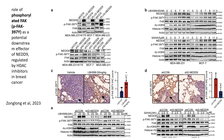Panel D compares FAK phosphorylation levels in lung metastases from NET9 knockdown mice and controls. Knockdown of NET9 significantly reduces FAK phosphorylation, as shown in the IHC staining and quantified scores, further supporting the conclusion that NET9 is essential for FAK phosphorylation. Panel E investigates whether HDAC inhibitors can enhance FAK phosphorylation in the absence of NET9. HDAC inhibitors fail to increase FAK phosphorylation levels in NET9 knockdown cells, confirming that NET9 is required for HDAC inhibitor-mediated FAK phosphorylation. Targeting the NET9–FAK pathway could be a potential strategy to counteract HDAC inhibitor-driven metastasis in breast cancer.